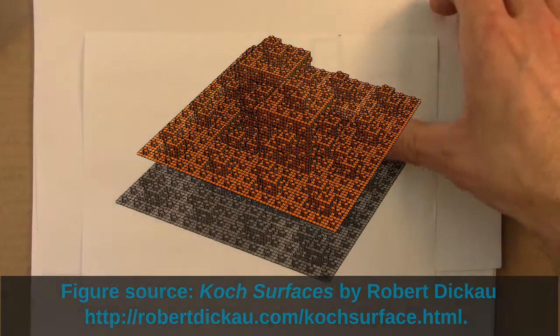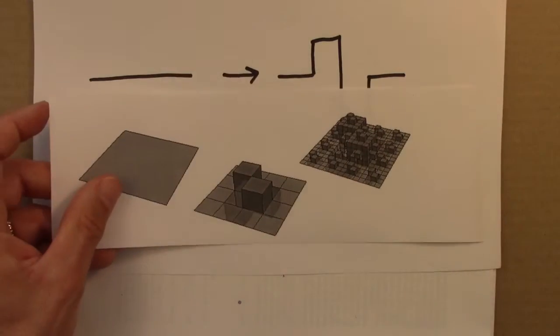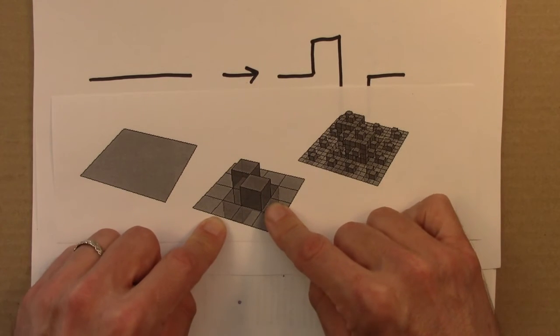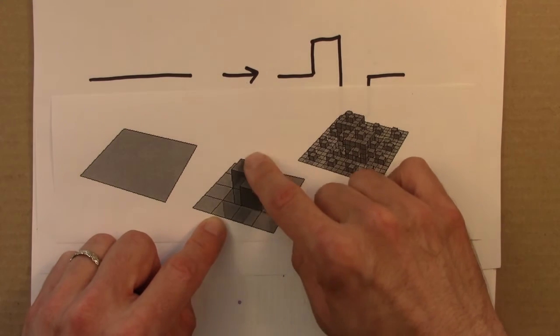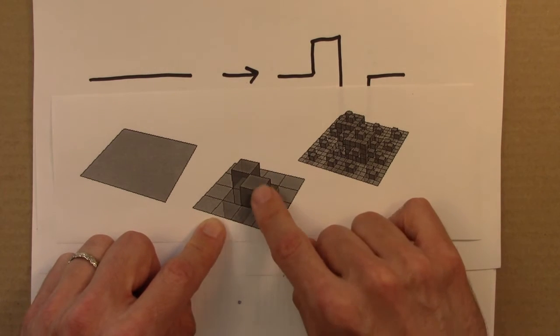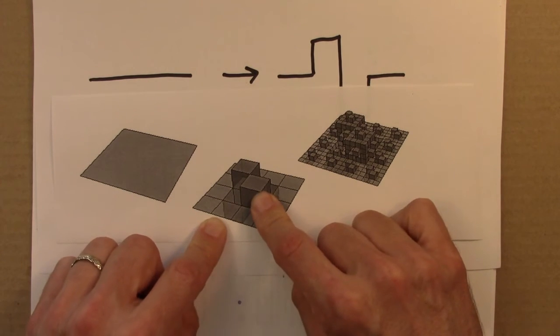But we could imagine or wonder, well what would happen if we put a little bit of randomness in this rule? There would be a lot of different ways we could imagine doing it. Some of the squares could go up, some could go down. They could go up and down by different amounts. They don't have to go always the same amount.